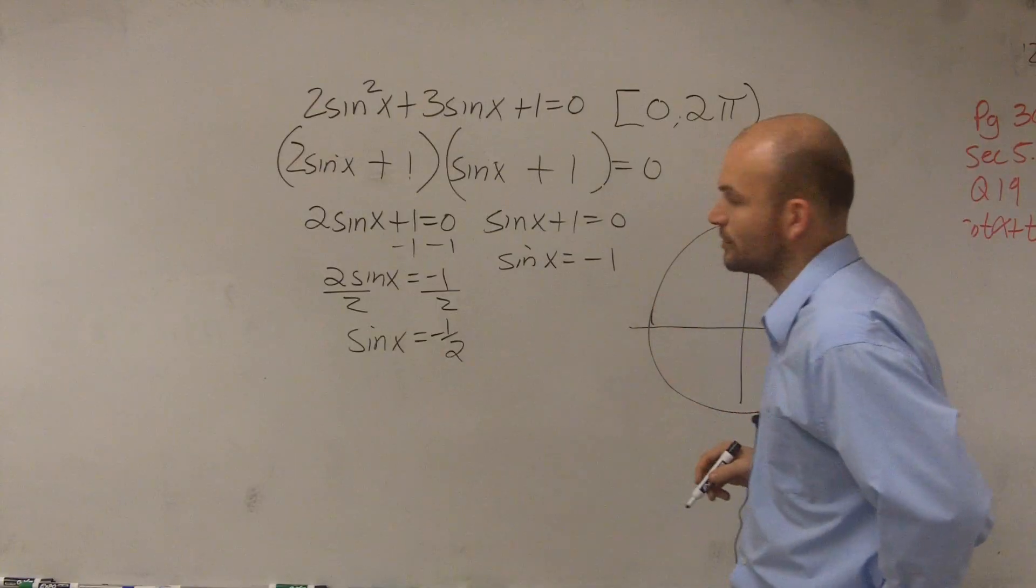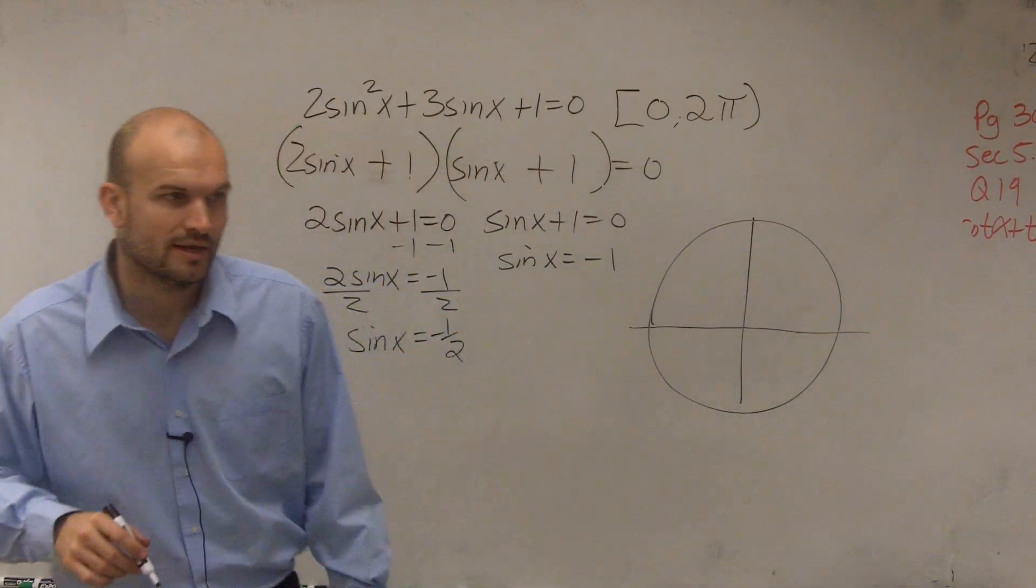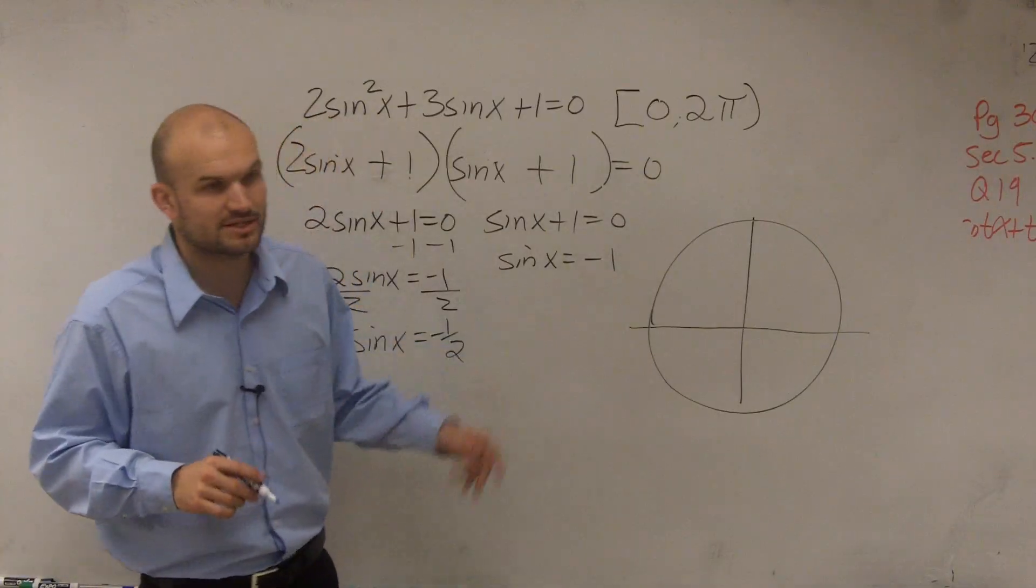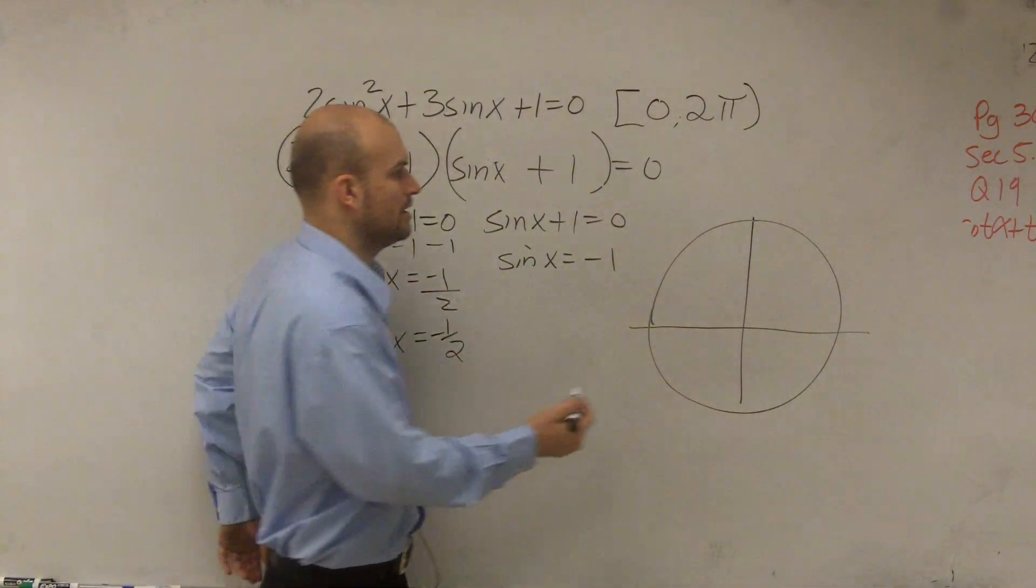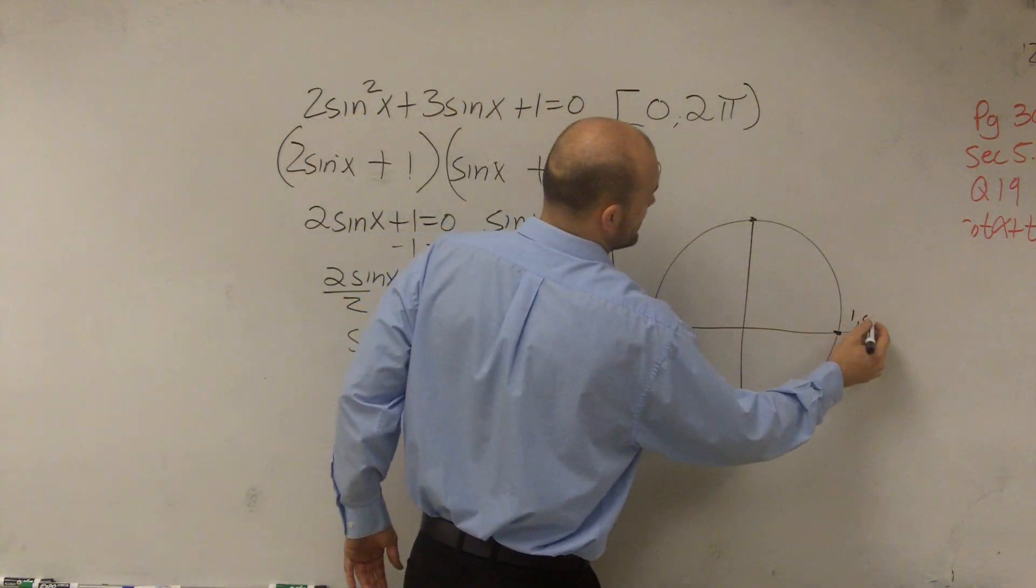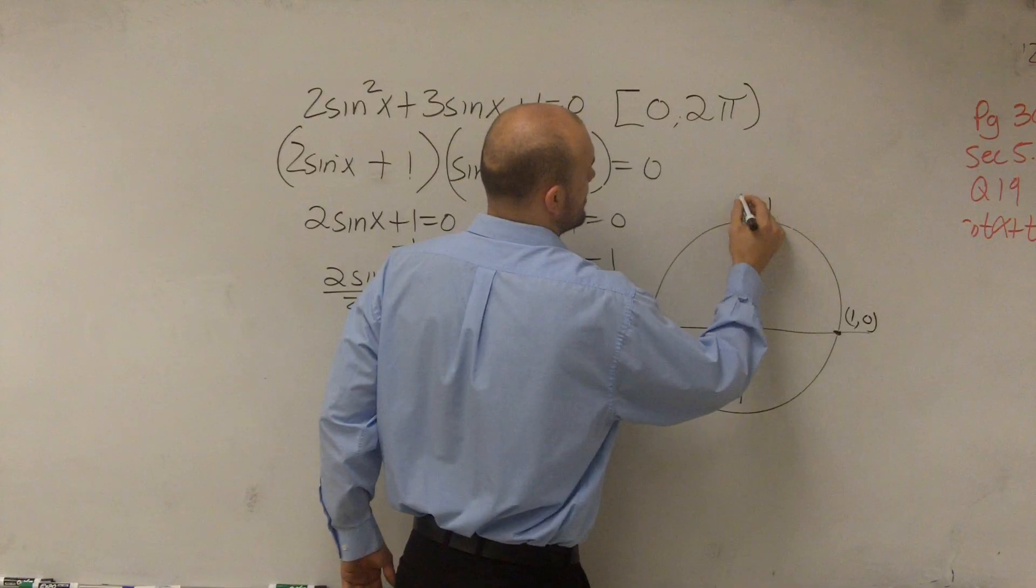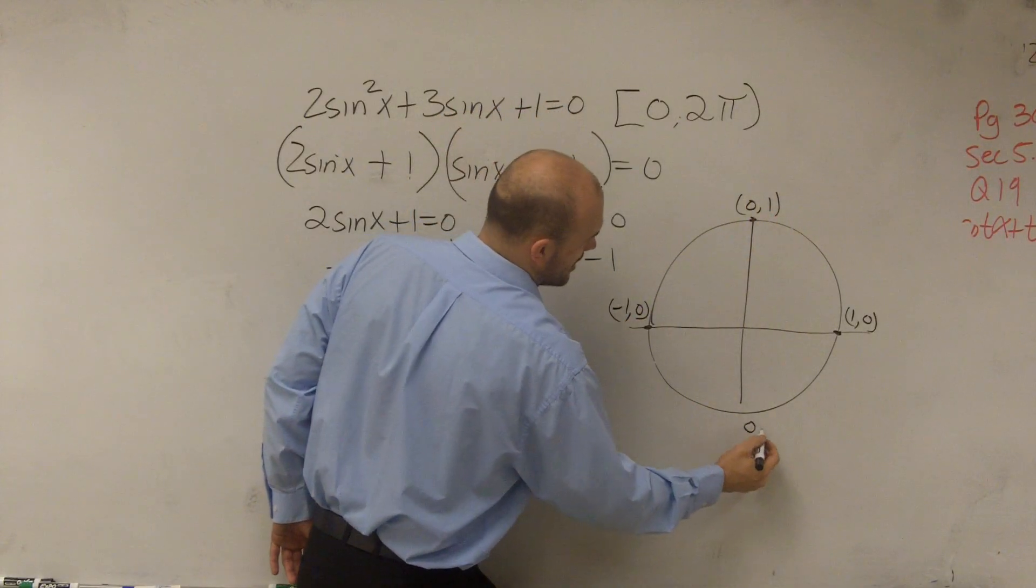So we're going to take a look at our unit circle, and we say, all right, well, I think this one's kind of the most basic. When is sine equal to negative 1? Well, you have these four coordinate points. Here's 1 comma 0. Here's 0 comma 1. Negative 1 comma 0. 0 comma negative 1.